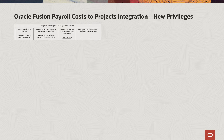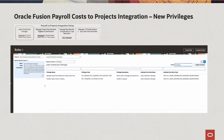We have created a new out-of-the-box role called the Labor Distribution Manager for reference for customers. As you can see, this role comes with two new privileges. Managed Payroll Pay Elements for Project Labor Cost has the required activities you need to do to set up the payroll integration. Transfer Payroll Cost to Project allows for the execution of the transfer payroll cost to projects — this payroll activity within the import payroll cost job.